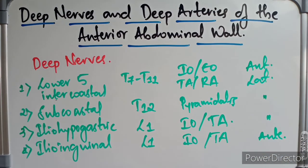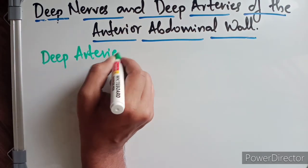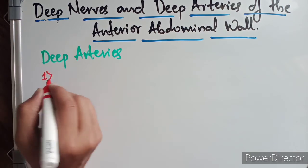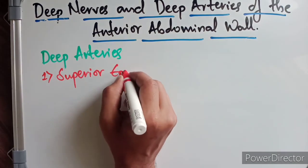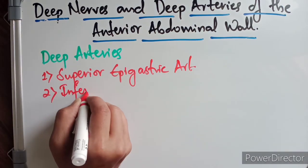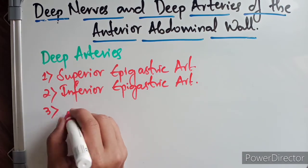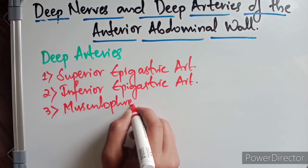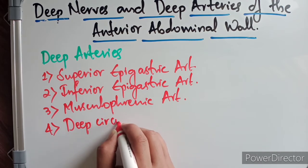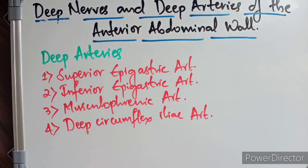These are the deep nerves of the anterior abdominal wall. Coming to the deep arteries of the anterior abdominal wall — the first one is the superior epigastric artery, the second one is the inferior epigastric artery, the third one is the musculophrenic artery, and the last one is the deep circumflex iliac artery. These are the four deep arteries of the anterior abdominal wall.